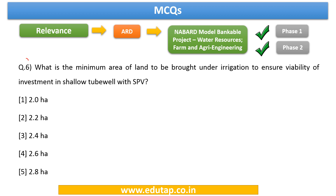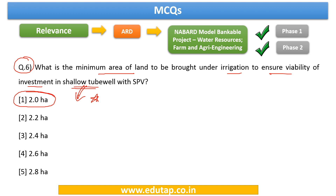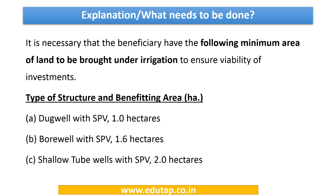Question 6: What is the minimum area of land to be brought under irrigation to ensure viability of investment in a shallow tube well with SPV? We had discussed dug well, then bore well, and now we have come to shallow tube well. The answer is 2 hectares. Kindly memorize this.